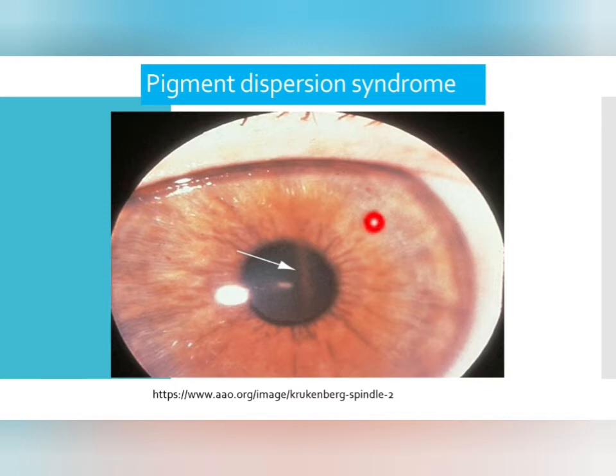A specific sign indicating gonioscopy is needed in pigment dispersion syndrome is the Krukenberg spindle — a linear arrangement of pigmentation on the corneal endothelium. Pigment dispersion syndrome occurs due to concavity of the iris, causing the iris to touch the lens zonule. This rubbing causes iris pigment to deposit into the aqueous humor. This abnormal deposition gets stored on different quadrants of the anterior chamber angle, ultimately leading to elevated IOP and potentially optic nerve damage and glaucoma — called pigmentary glaucoma.